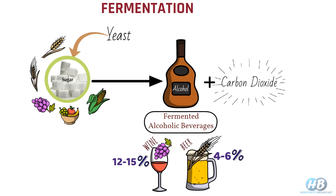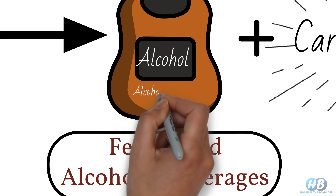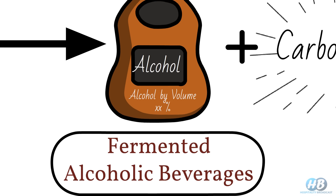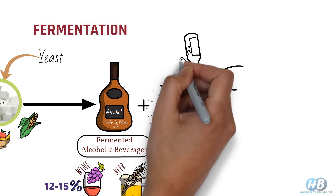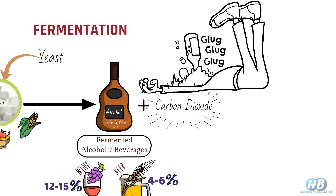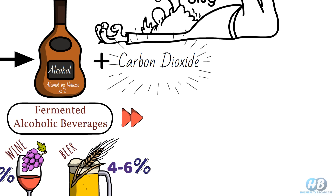The best way to determine how alcoholic a beverage is, is to read the label, where you will find ABV or alcohol by volume written on it. But what if you want something a bit stronger with a higher alcohol percentage?